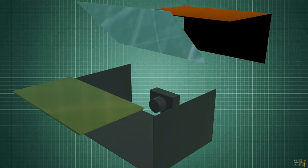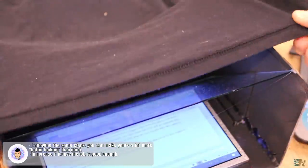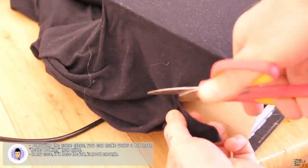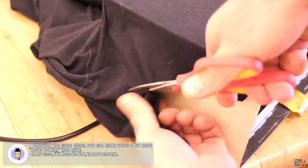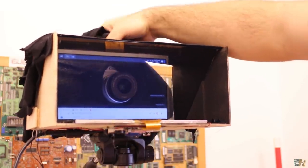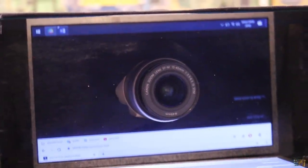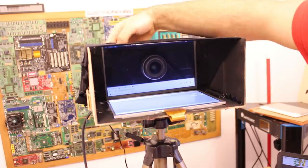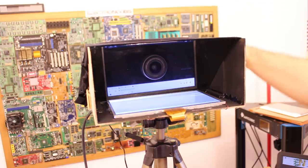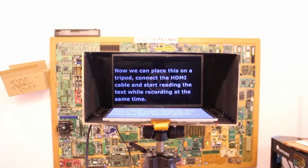Ok, so the final step is to add the black material. Place that over the glass and also cut it to a smaller size. I glue it all around and leave a hole in the middle so only the camera lens will pass. In this way we won't see the white color of the camera. All we have to do now is to place this on a tripod. Connect the HDMI cable and start reading the text while recording at the same time.